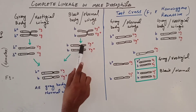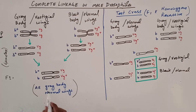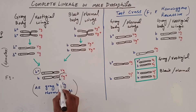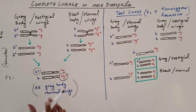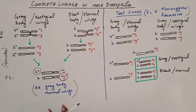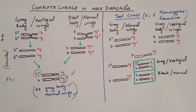In the F1 generation, one chromosome comes from each parent. All F1 organisms show gray body and normal wings, since gray body and normal wing genes are dominant. This confirms that gray body and normal wing are dominant characters.